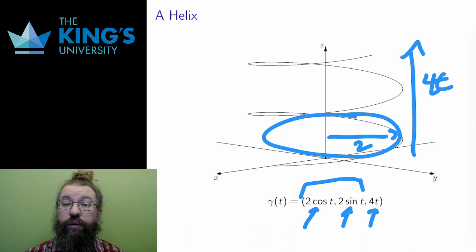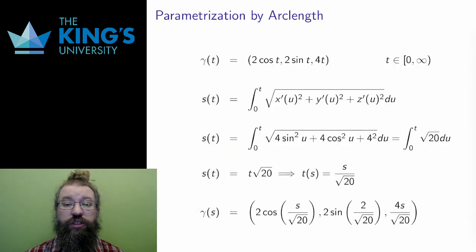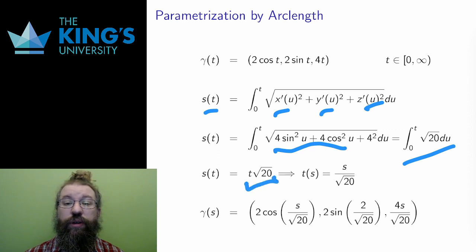I follow the algorithm. I calculate the arc length function, taking the derivatives of the individual coordinates. I change the variable to u to avoid confusion of doubling the t variable. And I use trig to simplify the integrand, and then to evaluate the integral and to get S of t equals t times root 20. This is an easy function to invert. t is s divided by root 20.